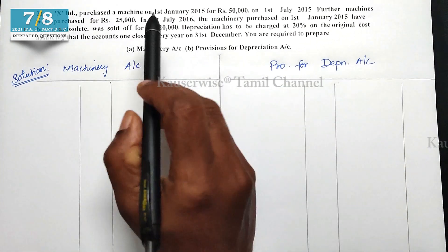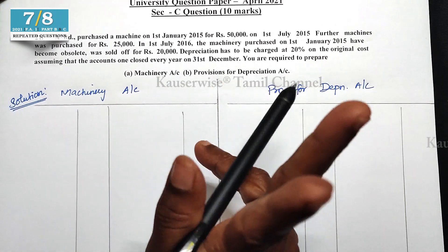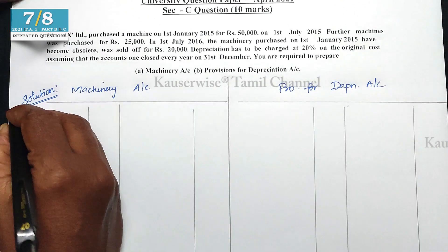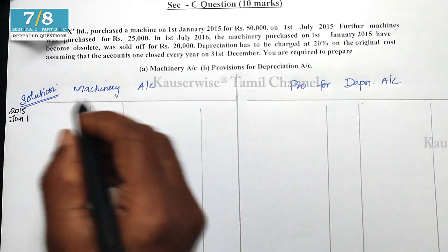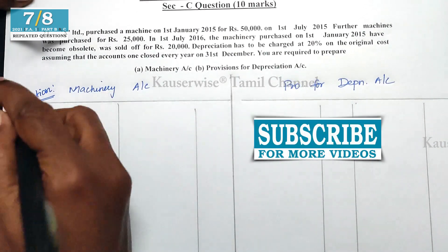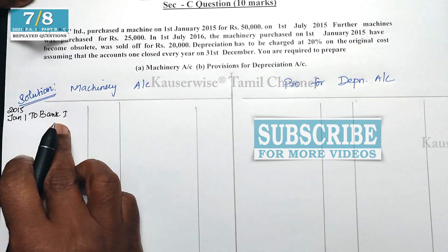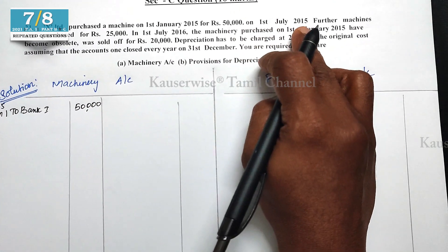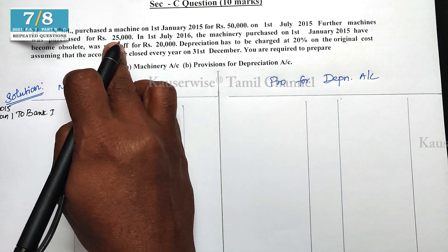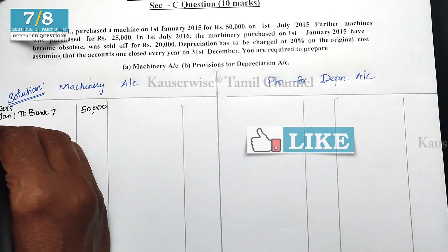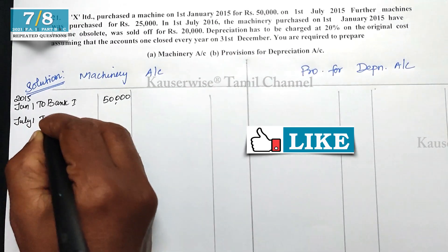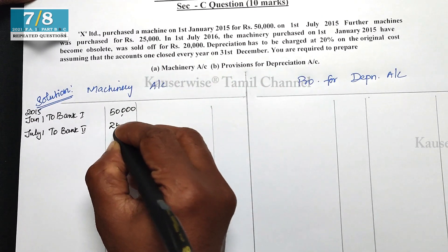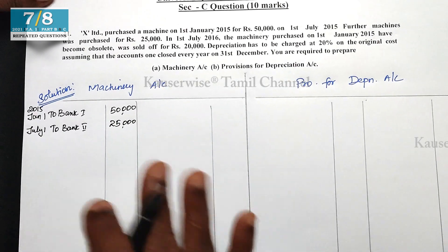First, the machinery account. On the debit side for 2015 January 1st, the entry is Bank — this is the first machinery — amount 50,000. On 1st July 2015, a further machine was purchased for 25,000, so another debit entry: Bank — second machinery — 25,000.